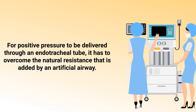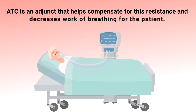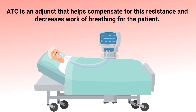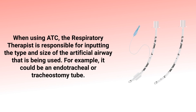For positive pressure to be delivered through an endotracheal tube, it has to overcome the natural resistance that is added by the artificial airway. Automatic tube compensation is an adjunct that helps compensate for this resistance and decreases the work of breathing for the patient.